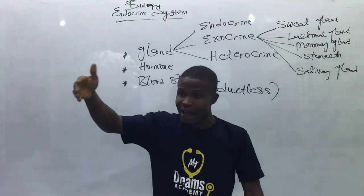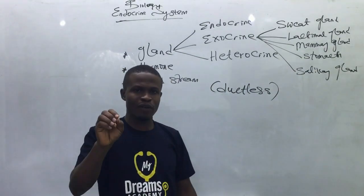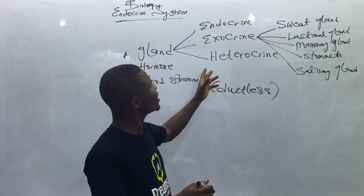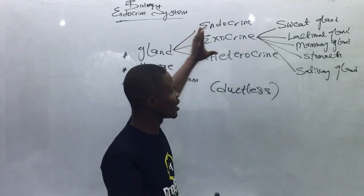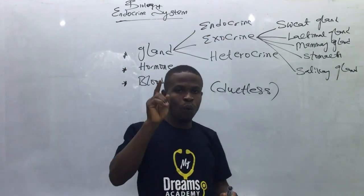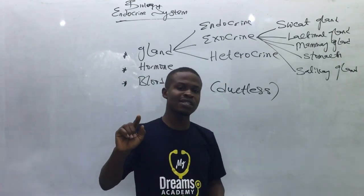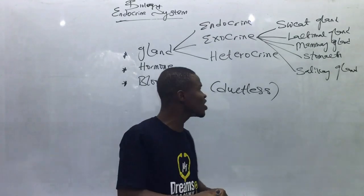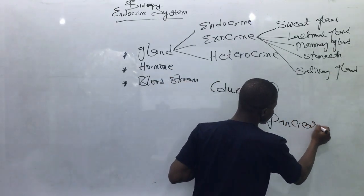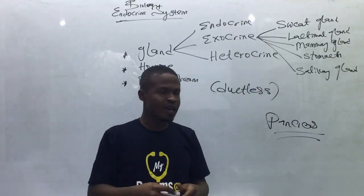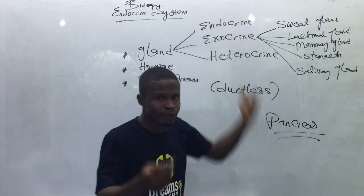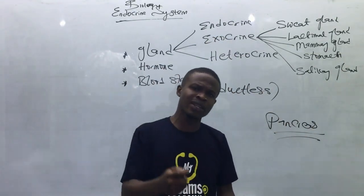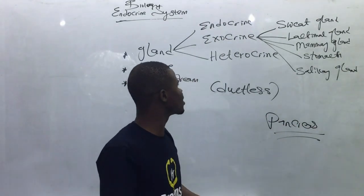The heterocrine actually combines the function of endocrine and exocrine. At your level — for JAMB, schools of nursing, WAEC, and NECO — the heterocrine we know is the pancreas. The pancreas has a dual function: it has an exocrine function and also an endocrine function. When we reach the pancreas we are going to explore both the endocrine and exocrine function of the pancreas.